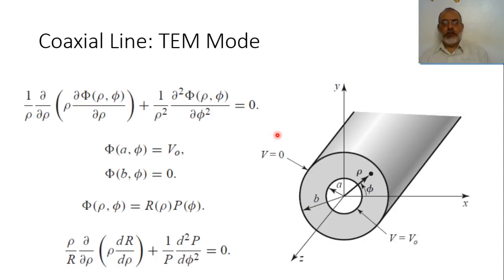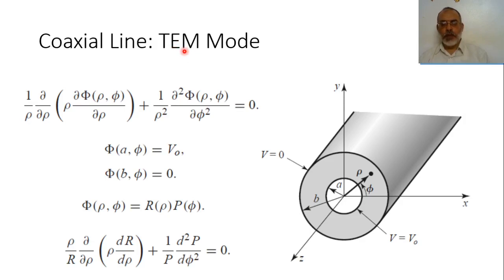Another important type of waveguide is the coaxial line waveguide. It is composed of an inner cylindrical conductor surrounded by an outer cylindrical conductor, and these two conductors are separated by a dielectric medium. Because this coaxial waveguide configuration is composed of two conducting materials, it can be used to support transverse electromagnetic waves, as in the case of parallel plate waveguide.